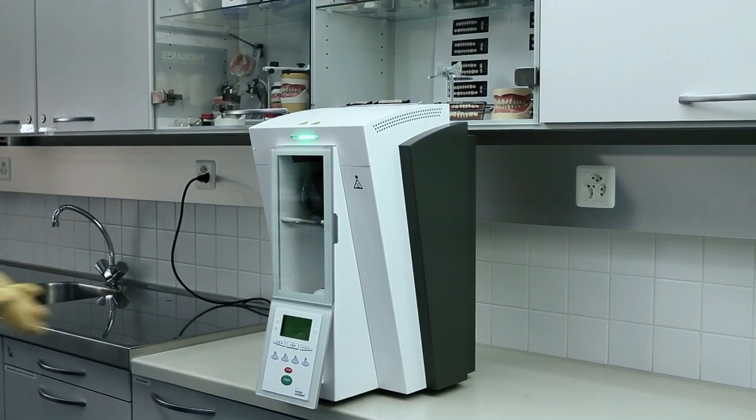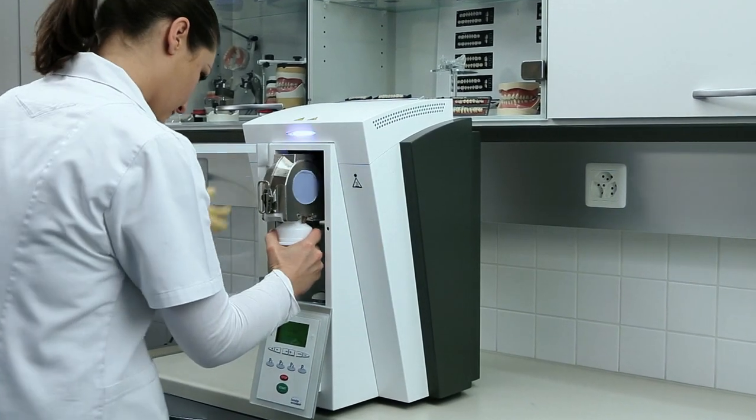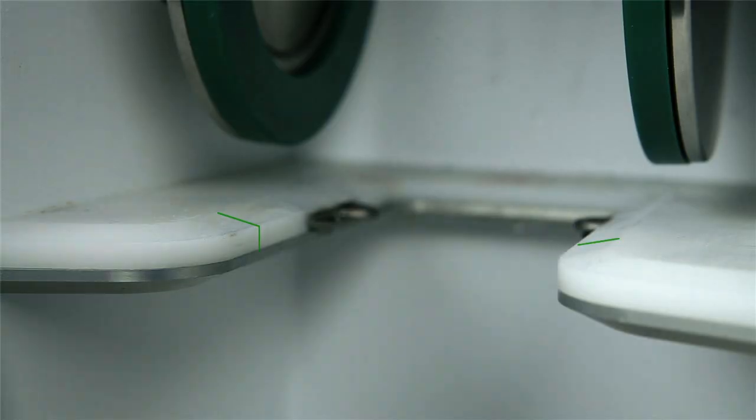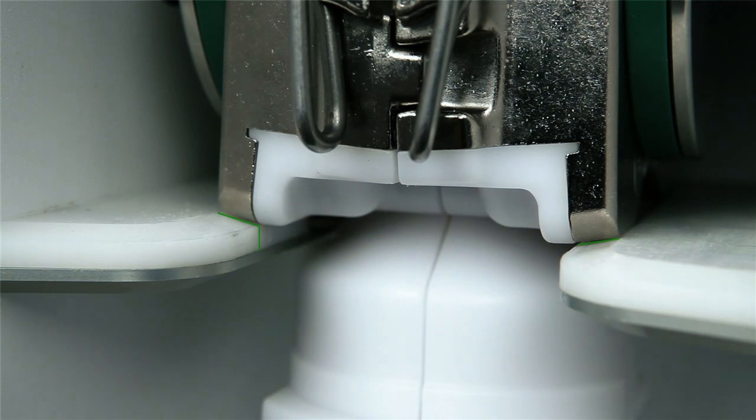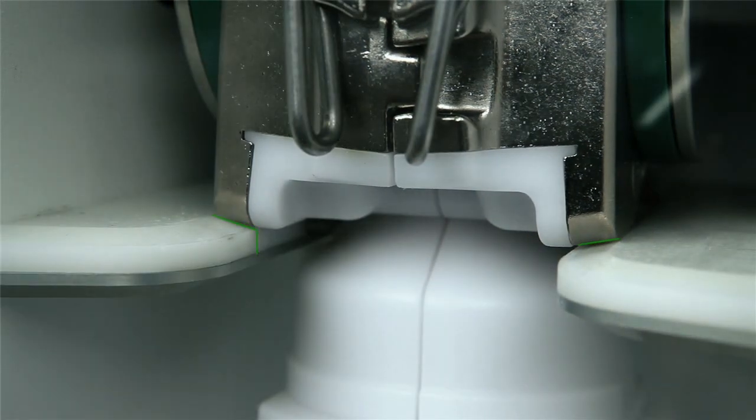Slide the flask with the capsule into the polymerization chamber until it stops via the flask holder. The flask perceptibly snapping into place indicates the correct position.